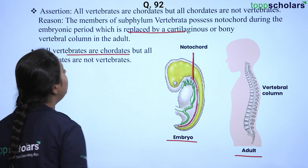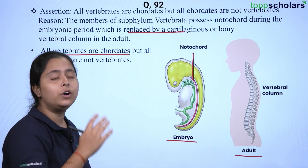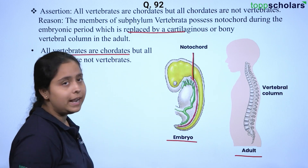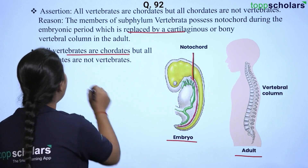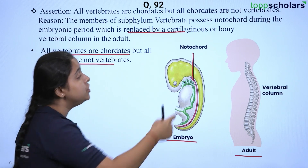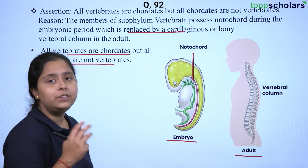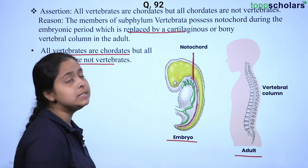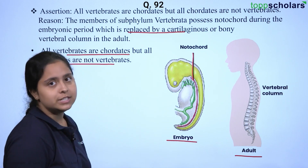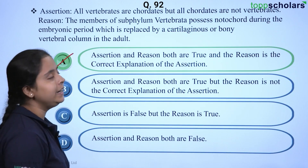Chordates are organisms which have the presence of notochord in some region or during some part of their lifetime. Vertebrates, which have a vertebral column, derive it from the notochord itself — hence all vertebrates are chordates, but all chordates are not vertebrates. In chordates we have three subphyla: Cephalochordata, Urochordata, and Vertebrata. Cephalochordata and Urochordata members are not vertebrates. Thus both statements are true and option A is the correct answer.